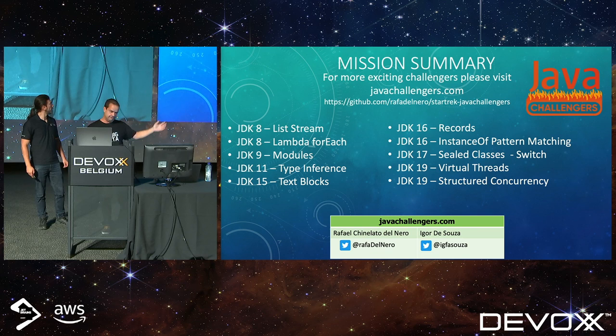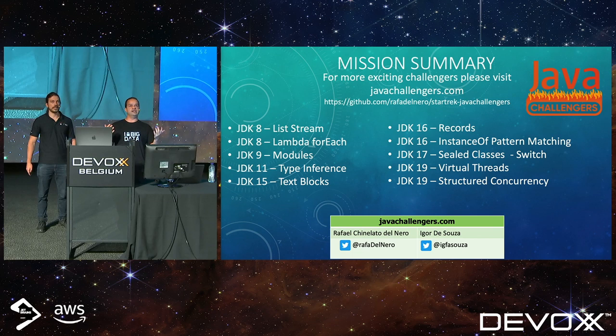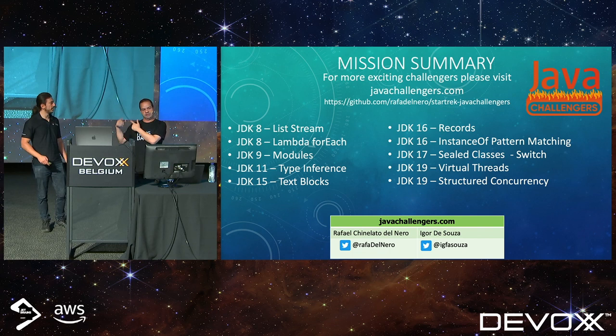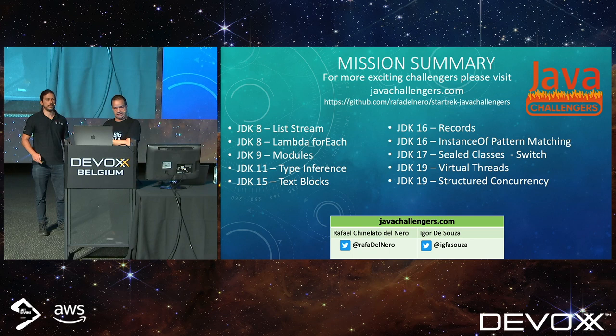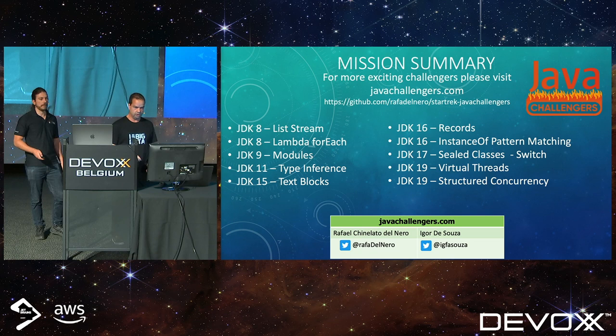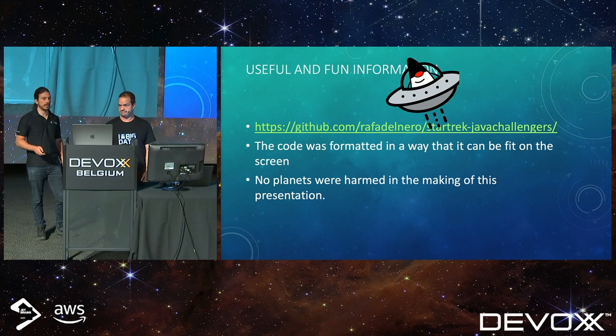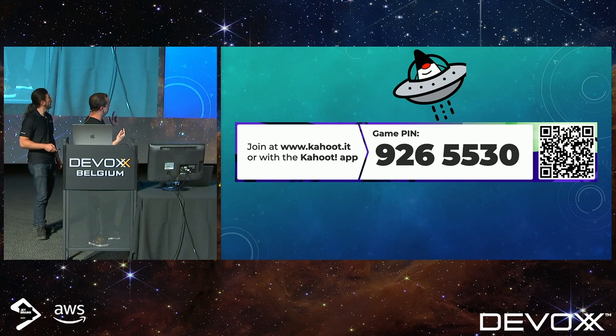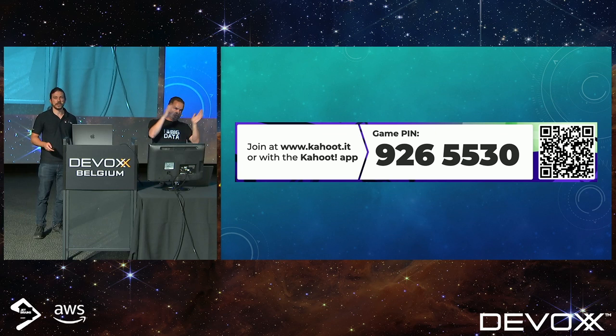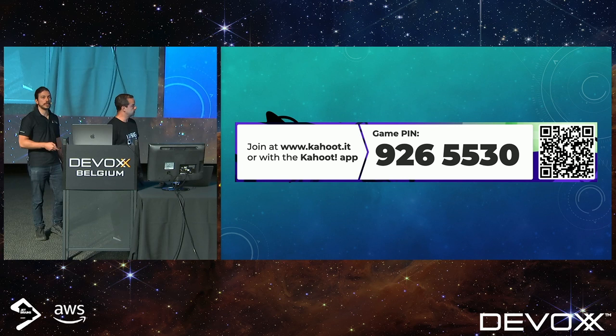Rafael is going to be on the right and I'm going to be on the left. You can follow us on social networks. If you already know about the Java Challenges — javachallenges.com — Rafael Del Nero is the creator of the Java Challenges. He's a Java Champion, he's the author of books, and he has around 15 years of experience. I'm going to show the Kahoot website. You need to go to kahoot.it and use this number as a pin, or you can just use the QR code. That should be good.